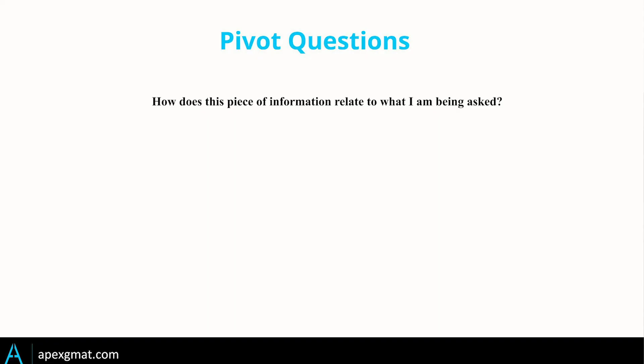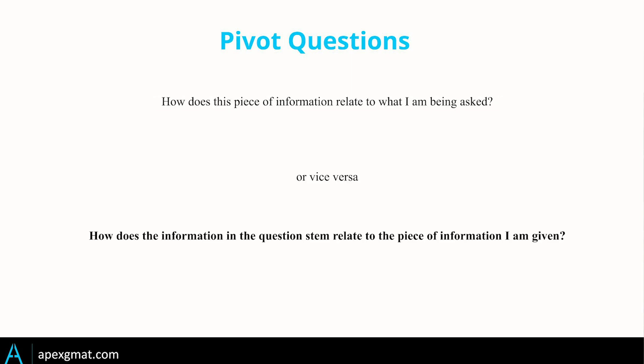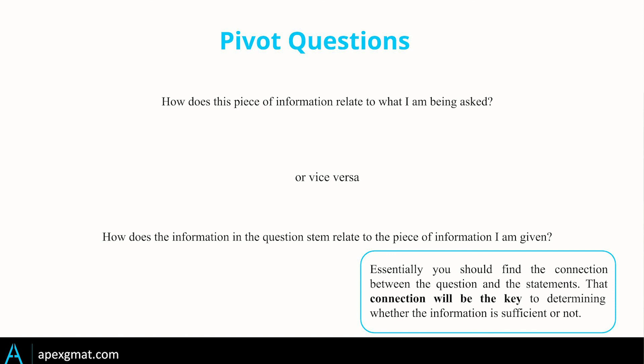One of the most important pivot questions to ask is: how do I convert this piece of introduced information into what the question stem is asking, or vice versa? Almost certainly they're going to be related, and it's in that relationship that you determine sufficiency. As the subtleties increase, that relationship defines the entire problem. I hope this helps — wishing you a great day, and like and subscribe below. We'll see you real soon.